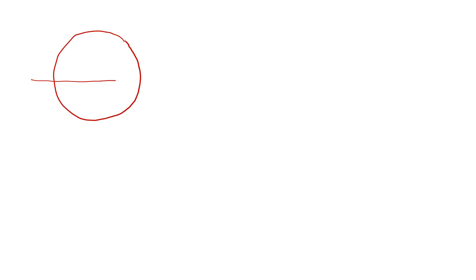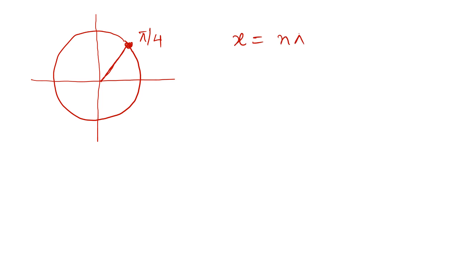Let us take this solution on the unit circle. This is our π/4 — if you join this line, the distance to that point equals 1. You can understand from the unit circle where the solution nπ ± π/4 comes from.